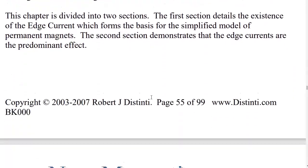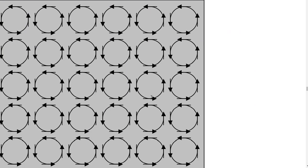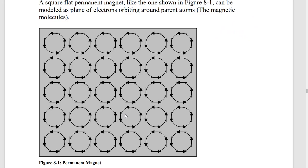If you go down in the paper, there's a picture showing a magnetic material. You can see there are little loops — these are the electrons in the shell of a particular ferrite atom, or a neodymium magnet atom, or whatever the magnetic material is.